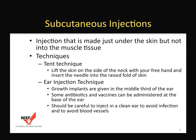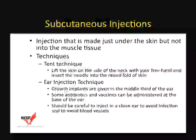The ear injection technique, primarily used for growth implants, is given through the middle one-third of the ear. Start toward the outer portion of the ear so that the implant ends up in the middle portion. Some antibiotics and vaccines have been approved for injection at the base of the ear. When giving injections at the ear, always make sure the surface is clean and try to avoid blood vessels to limit any bleeding.